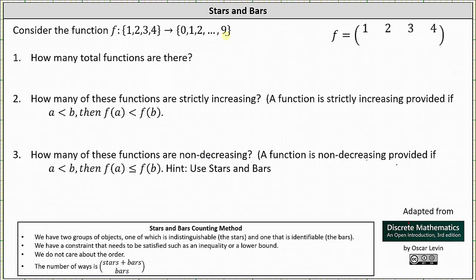If we take a look at the two-line notation of the function f, notice how we have the elements from the domain in the first row, and we'd have the elements from the range in the second row, which must come from the codomain. Notice the codomain contains 10 elements, and therefore there are 10 choices for each of the four outputs. Using the multiplicative counting principle, the total number of functions is equal to 10 to the fourth, or 10,000.